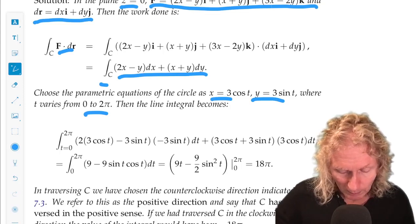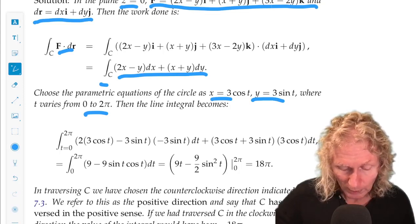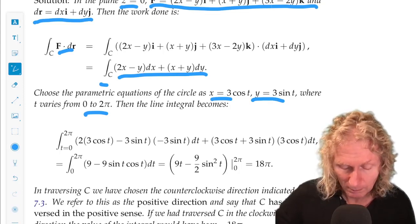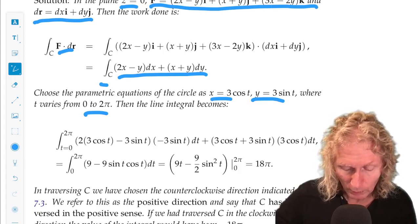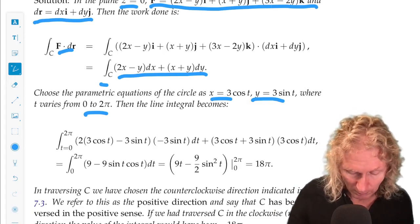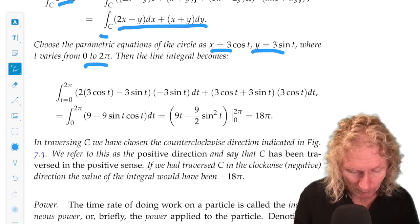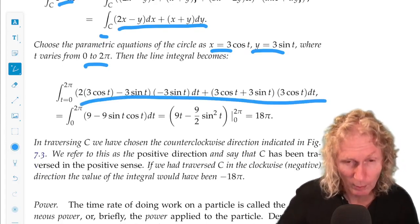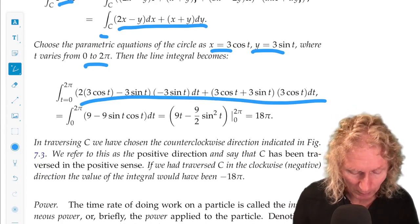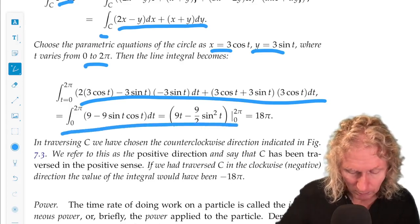dx would be 3 minus sine t dt, dy would be 3 cosine t dt. We plug this in, re-parametrizing the integral, do the integral, and we get a number.